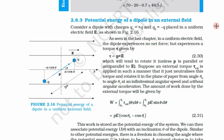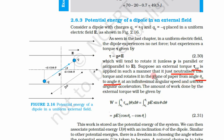For any other angle the dipole will rotate. Now suppose we apply some external torque. There is an internal torque due to the electric field and the dipole, and we apply an external torque τ_ext in such a manner that it just neutralizes the internal torque and rotates the dipole in the plane of paper from angle θ₀ to θ₁.